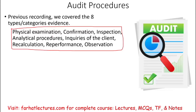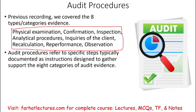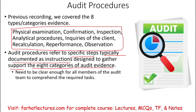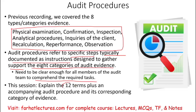In this session, we need to learn about the procedures — the steps that we need to undertake in order to collect this evidence. Audit procedures refer to specific steps, typically documented as instructions designed to gather support for the eight categories of audit evidence. Those instructions need to be clear so that all members of the audit team can follow and understand the required tasks. We're going to be looking at 12 audit procedures, and cover an example for each to show how these 12 procedures can collect evidence for the eight categories.